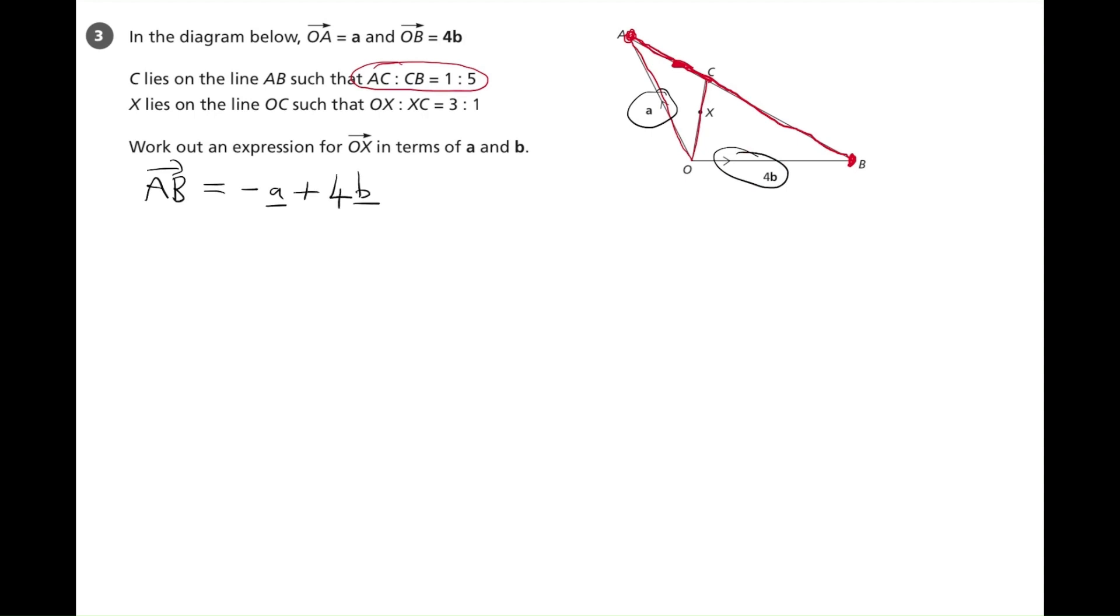Looking at the ratios, AC to CB is 1 to 5. So AC is one part, CB five parts. So the whole line AB is six parts, and AC is one of those, so it's one sixth. So we know that the vector AC is one sixth of AB. So that's one sixth of minus a plus 4b.